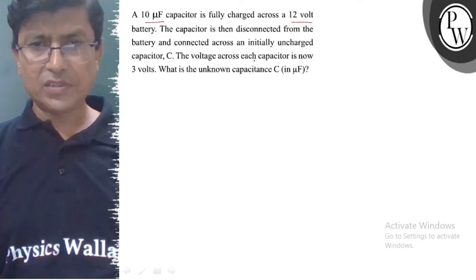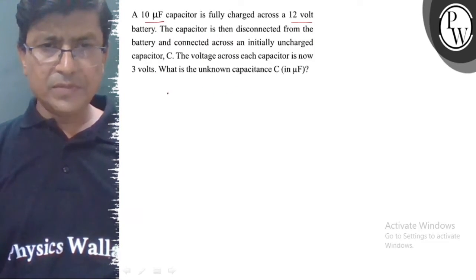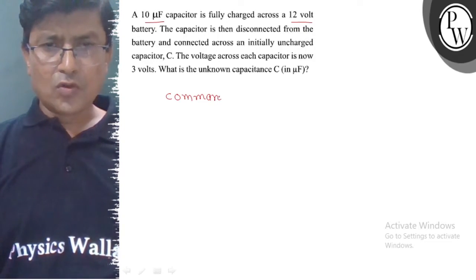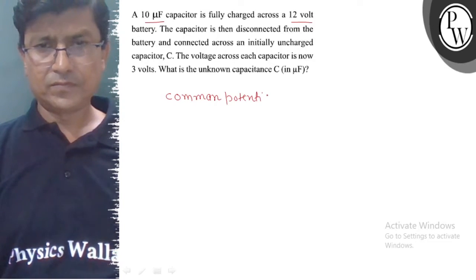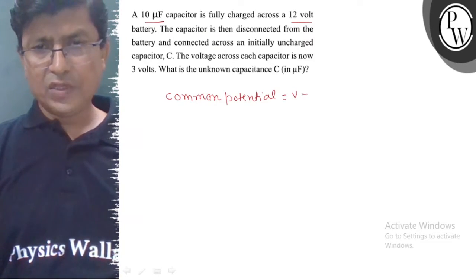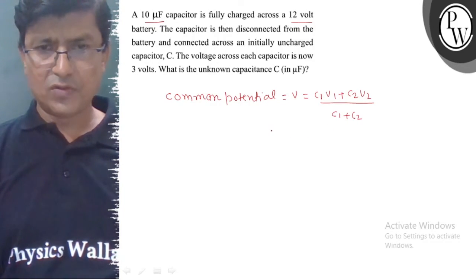The voltage across each capacitor is now 3V. We need to find the unknown capacitor C. We know that the common potential is V equals C1V1 plus C2V2 upon C1 plus C2. The voltage V is 3V.